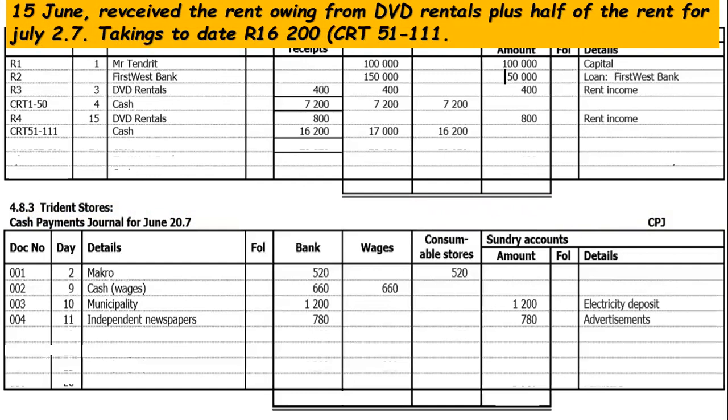Both the DVD Rentals amount and the cash takings are deposited together — you don't deposit separately. The bank will show a total of 17,000 rands deposited: 800 rands is rental income and 16,200 rands is fee income from business takings.